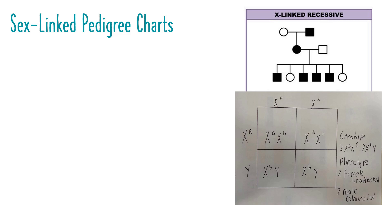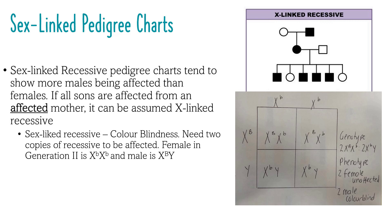In X-linked or sex-linked recessive pedigree charts, there are some key differences from autosomal recessive pedigree charts. In general, the trait will be expressed by males more often than females. The affected mother will pass on the X-linked trait to both her daughter and son. If the mother is affected, the son will also be affected regardless of the father being affected or not. Also, the affected mother's father will be affected. If the mother is a carrier — meaning she is unaffected — and the father is unaffected, then the male offspring will have a 50% chance of being affected and the daughters will not be affected. A classic example of this is colour blindness, where two recessive copies of the allele need to be present for a person to be affected.